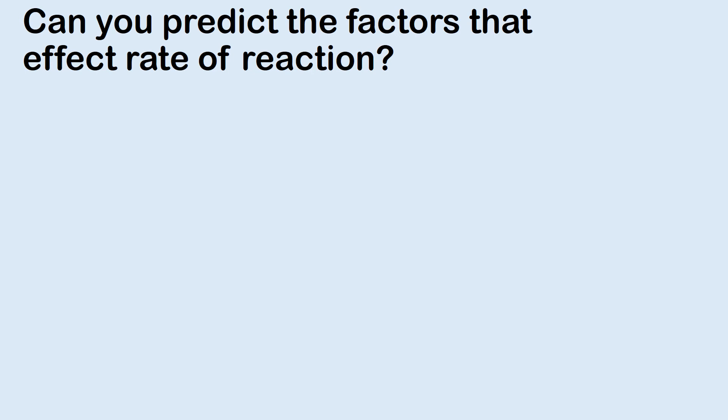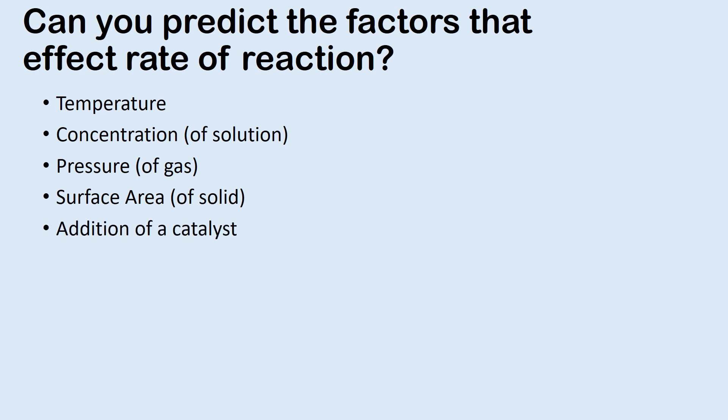We're going to be looking at factors that actually affect the rate of reaction in future lessons. There is a good chance that you might be able to guess the factors that affect the rate of reactions, so why not have a bit of a go at guessing some of the things that might make reactions either go faster or slower and we'll see how many you can get. Right, here they are: the temperature, obviously if you're looking at how hot or cold it is; the concentration of a solution; the pressure of a gas, which is kind of similar in terms of looking at the particles; surface area of a solid; or if you add a catalyst. Essentially what we do is look at each of those individually in future lessons and how they're going to affect things.